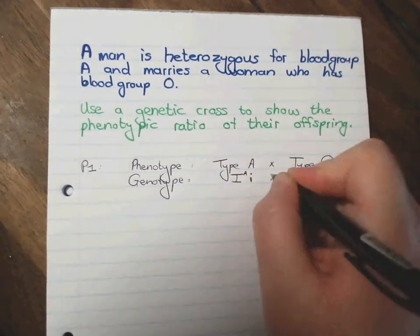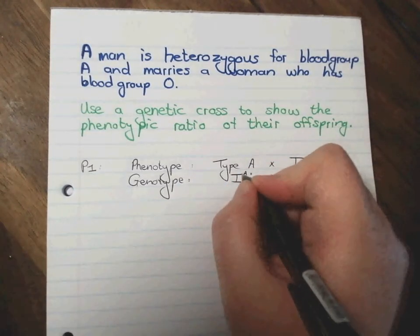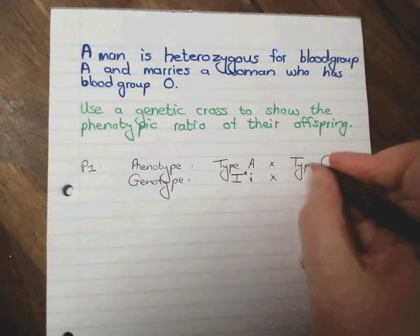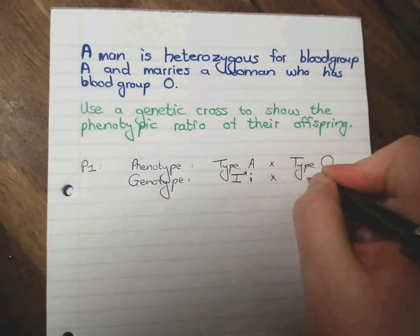Okay, and remember to make that little A in this place, you would make an exponent when you were doing math. Then blood type O, as we've seen, can only be two little small alleles.